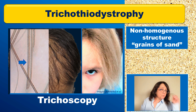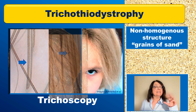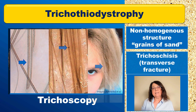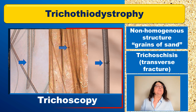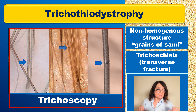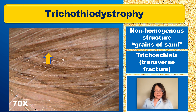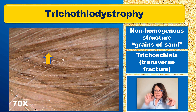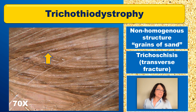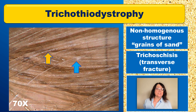So the grainy appearance is one feature which has been described, and the second one is the transverse fracture, which is associated with the increased hair shaft fragility. Here again, a trichoscopy picture of Trichothiodystrophy — you can appreciate the non-homogeneous, grainy type of structure of the hair shaft and also the transverse fracture.